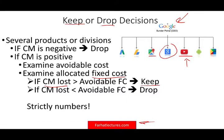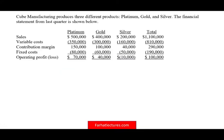The best way to understand this is to look at an actual example. Cube Manufacturing produces three different products: platinum, gold, and silver. The financial statements from the last quarter show sales, variable costs, and totals for each division. Platinum is making a profit of $70,000, gold a profit of $40,000, and silver is incurring a loss of $10,000.